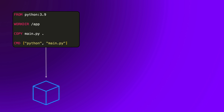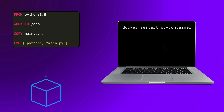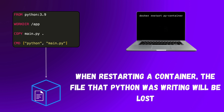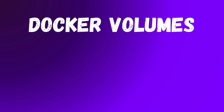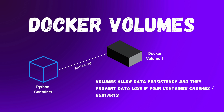So what problems do Docker volumes solve, and how do they work? Say we run a Python application that writes its logs to a file, but we restart the container for some reason. The log file is directly inside the container, so when restarting, the file Python was writing will be lost. This is where Docker volumes come into play — they give the ability to point an entire directory from the container to a volume, allowing data persistency and preventing data loss if your container crashes or restarts.